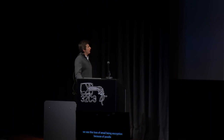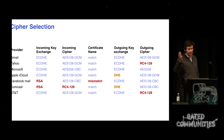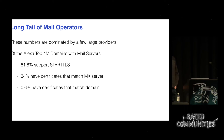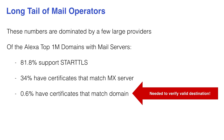Even for the big providers today, we're using bizarre ciphers. Even among the top email providers on the internet, we're still negotiating RC4. Facebook Mail still has a certificate that doesn't match anything — they have a signed certificate, it's valid, just not for a domain that has anything to do with their mail servers. And we're talking the top 10 in the world that send mail. AT&T and Yahoo are still initiating RC4 connections as of this morning. For the top million domains, about 80% support STARTTLS, about 34% have certificates that match the server, and only 0.6% have a certificate matching the domain such that you could actually validate you're sending mail to the right recipient.